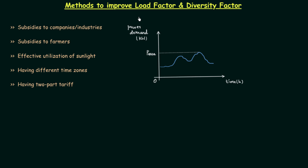In the previous lecture we saw why it is important to improve the load factor and the diversity factor, and we also saw the relation between load and diversity factors with the cost. In practical conditions the load factor is always less than unity, and in ideal conditions it is equal to unity. So by improving the load factor we want to make it equal to 1, and when this happens the cost of electrical energy reduces.